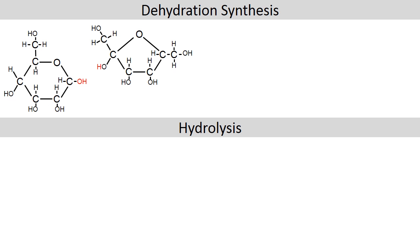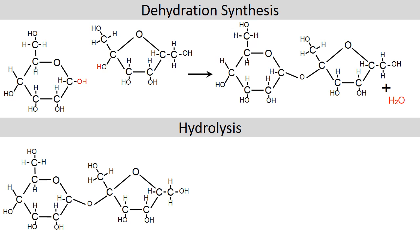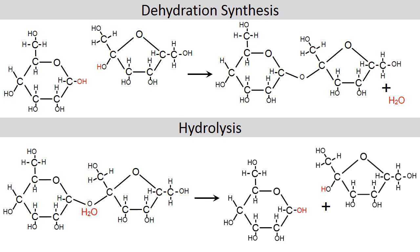Let's compare and contrast dehydration synthesis to hydrolysis. In dehydration synthesis, glucose and fructose bond together to make a disaccharide called sucrose — it's called a dehydration synthesis reaction because water is removed. Hydrolysis is really just the opposite — here sucrose with the addition of water is broken down into glucose and fructose. So the two reactions are just opposites of one another.